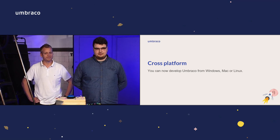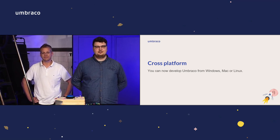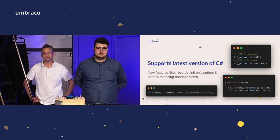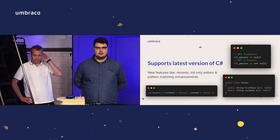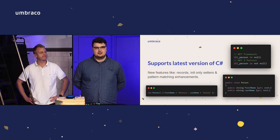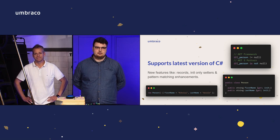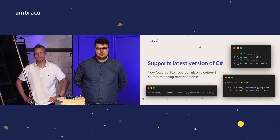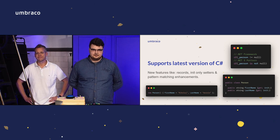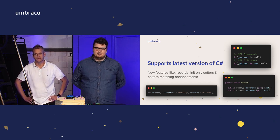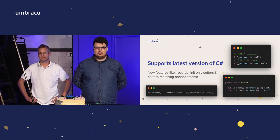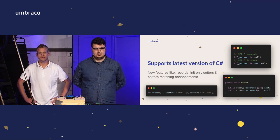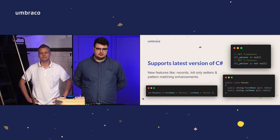The first big feature is cross-platform. Mac and Linux users, you can finally rejoice because now you can develop Umbraco from Windows, Mac or Linux. With .NET 5 comes support for the latest version of C#. As a student, I can tell you this is a big thing because this is what we learn in school, as Philip told you earlier — now it should be easier than ever to find newly graduated developers who already know .NET Core. Let's talk about new features like records and init-only setters.